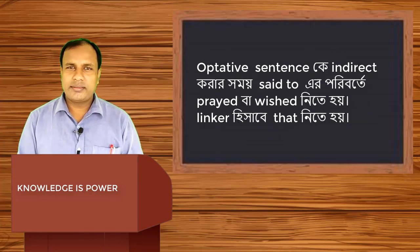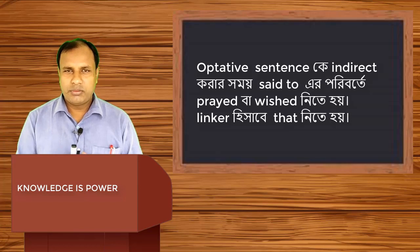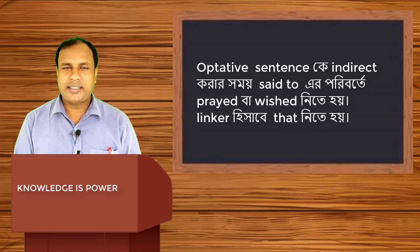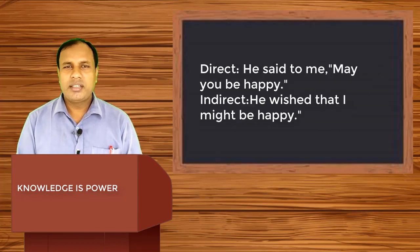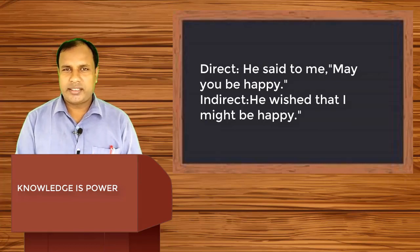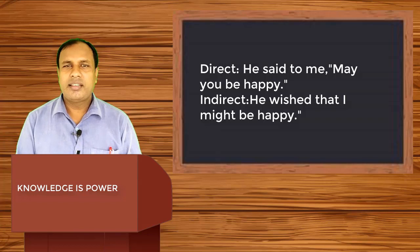For optative sentences, when converting direct to indirect, 'said to' changes to 'wished' or 'prayed,' and the linking word is 'that.' For example, such as, he said to me, may you be happy. He wished that I might be happy.